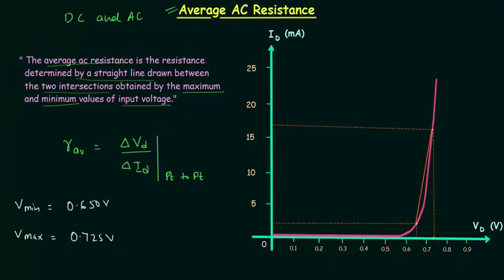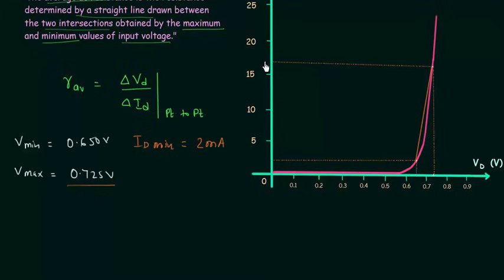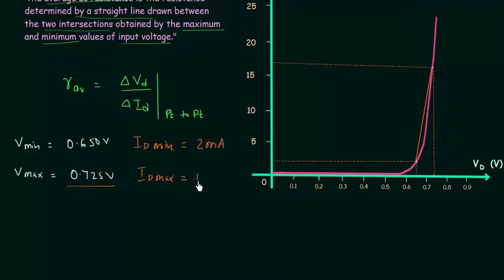Let's find out the value of average AC resistance. The minimum voltage is 0.650 volts, and at this voltage the current is 2 milliamps, so Id minimum is equal to 2 milliamps. When the voltage is 0.725 volts, the corresponding current is 17 milliamps, so Id maximum is equal to 17 milliamps. Now we have everything to calculate the average AC resistance.